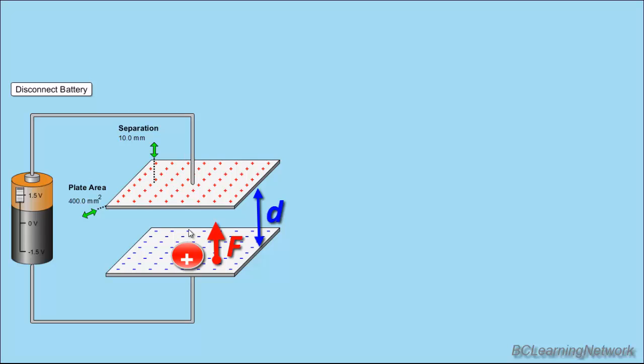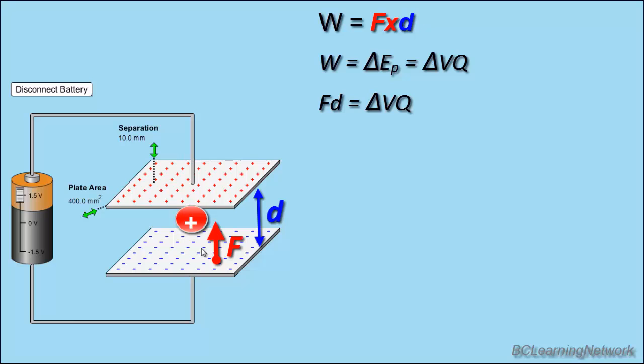Now, if I want to take that positive charge and move it back to the top, I have to do work on it. So, the work done to take that charge from bottom to top is equal to force times distance. Now, what we're doing when we're changing that location of that charge is changing its potential energy. And, since work is change in energy, the work done will go into changing its potential energy. And, we know that potential energy can be calculated by using voltage, or change in voltage times Q. So, our force times distance, our work, is equal to V times Q, or change in voltage times Q.